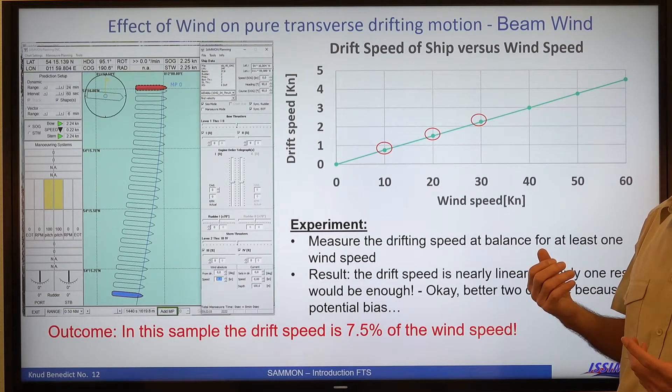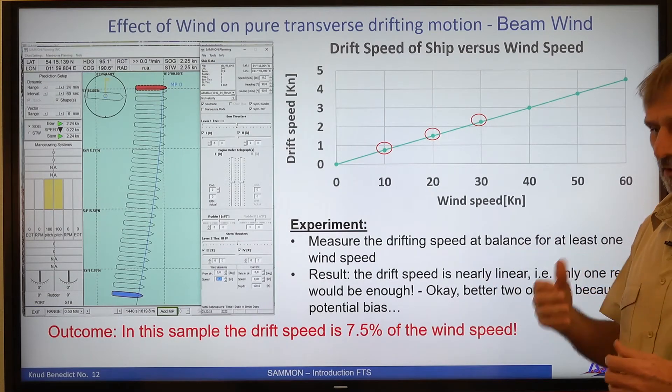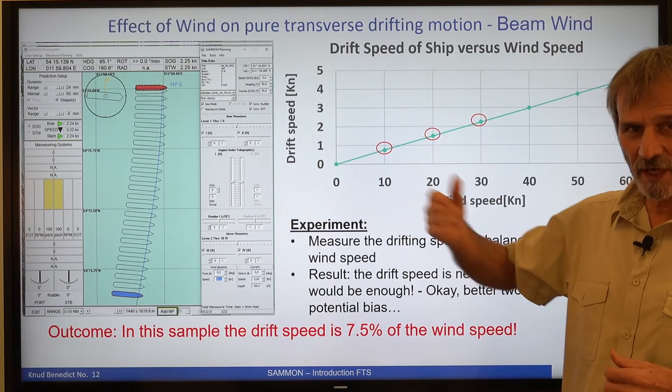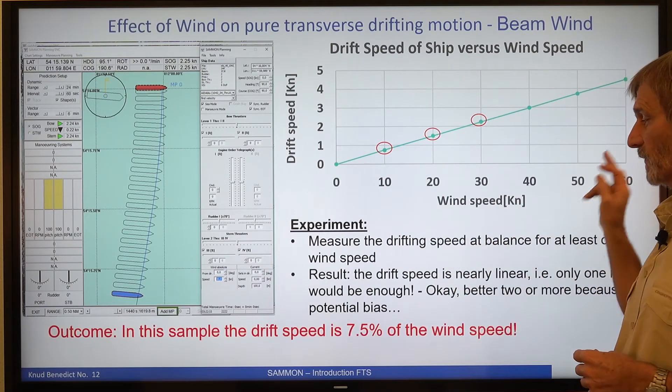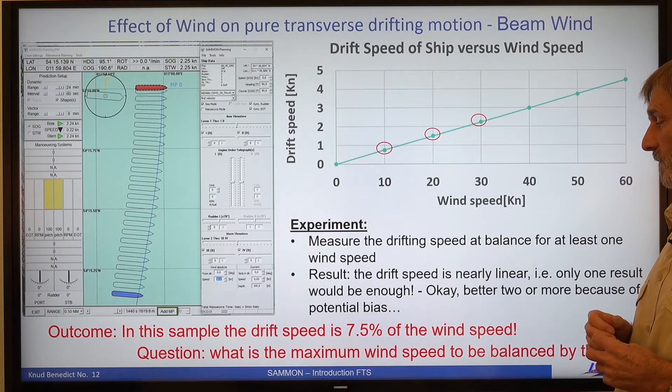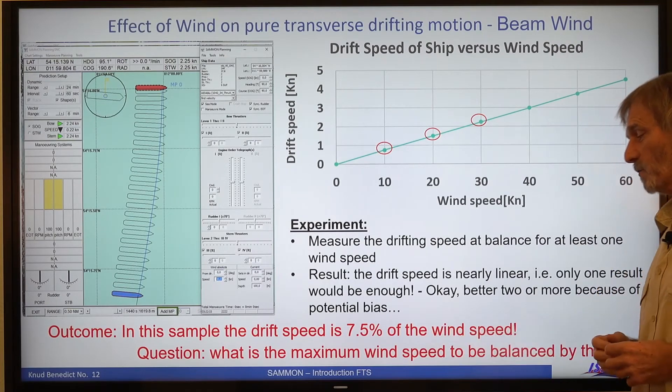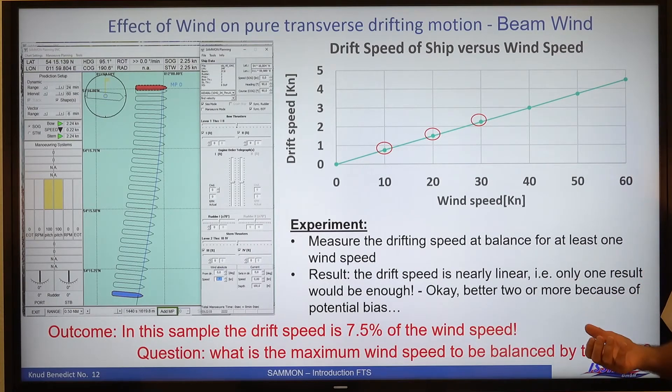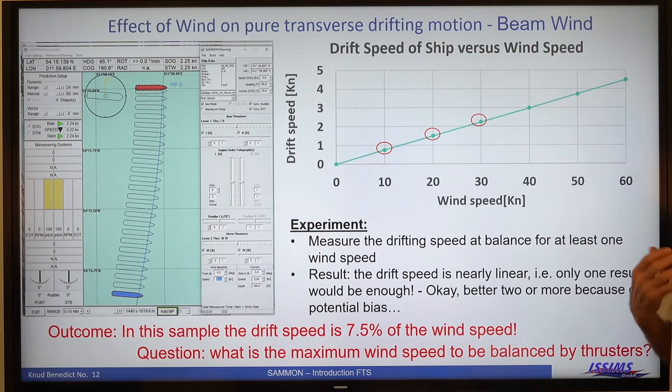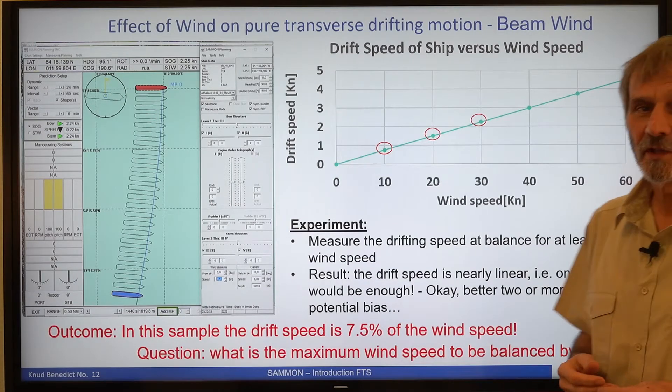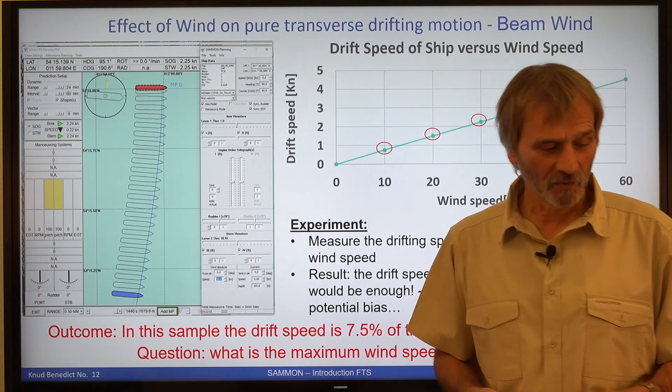How could we estimate now what we can achieve to balance this wind against the drifting speed with our thrusters? So what is the maximum wind speed to be encountered by thrusters? And for this, we could also use our SAMMON Planning Tool.